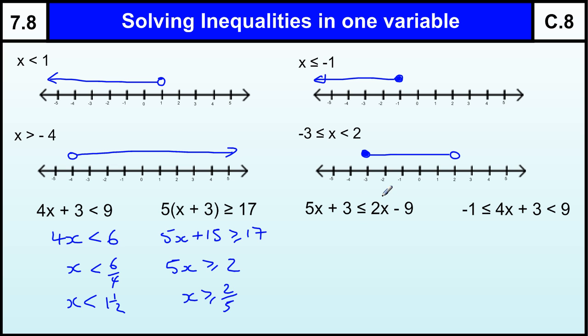Here we go, x is on both sides, take away 2x from both sides, to get 3x plus 3 is less than or equal to minus 9. Sorry, take away 3 from both sides to get 3x is less than or equal to minus 12. Divide by 3 to get x is less than or equal to minus 4.